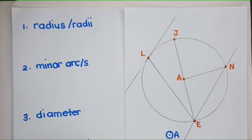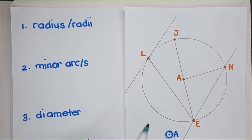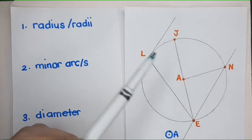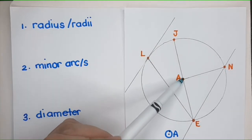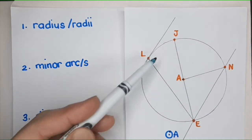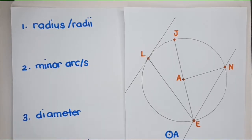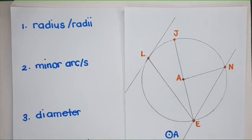So we have here Circle A. Remember, we name a circle using its center. That's why this is Circle A. Using this figure, we're going to identify and name some terms related to Circle A. Let's start.